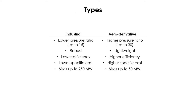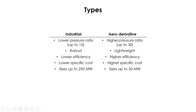In general, gas turbines can be classified as industrial, also called frame machines, and aero derivative machines that are lighter in weight, derived from the aircraft engine.